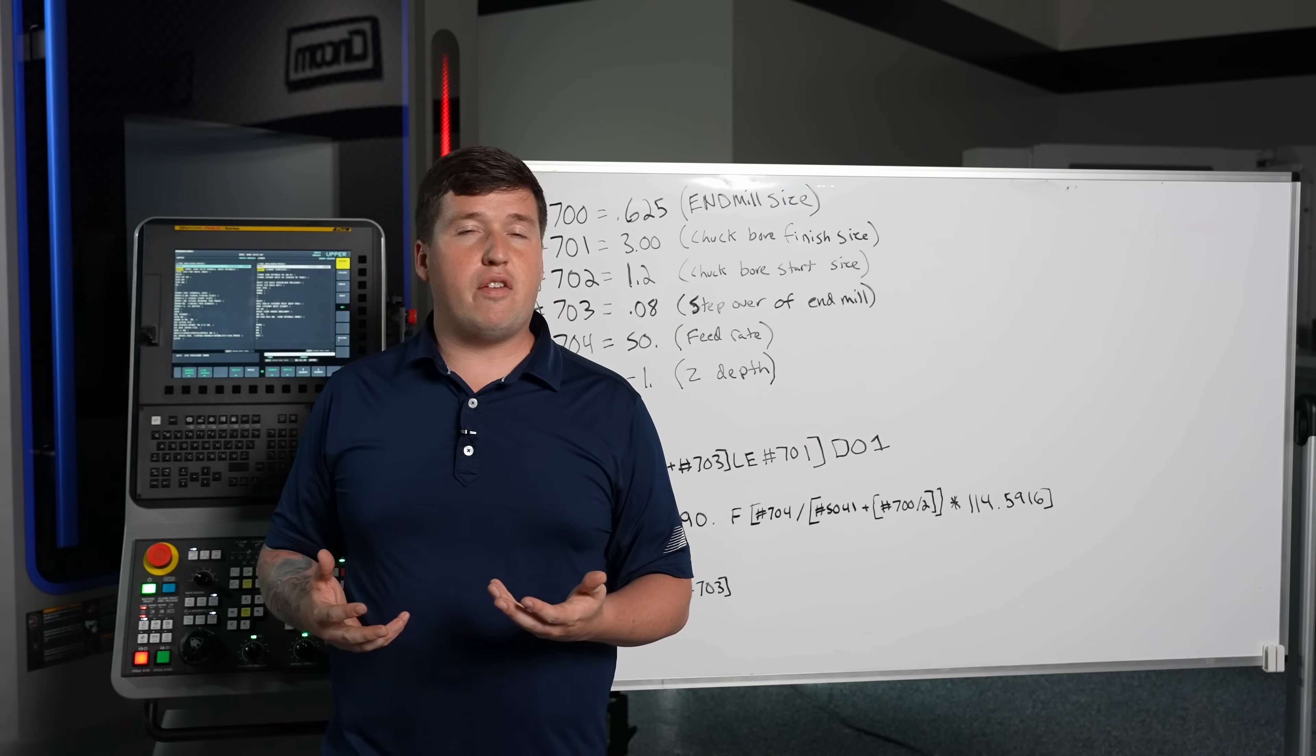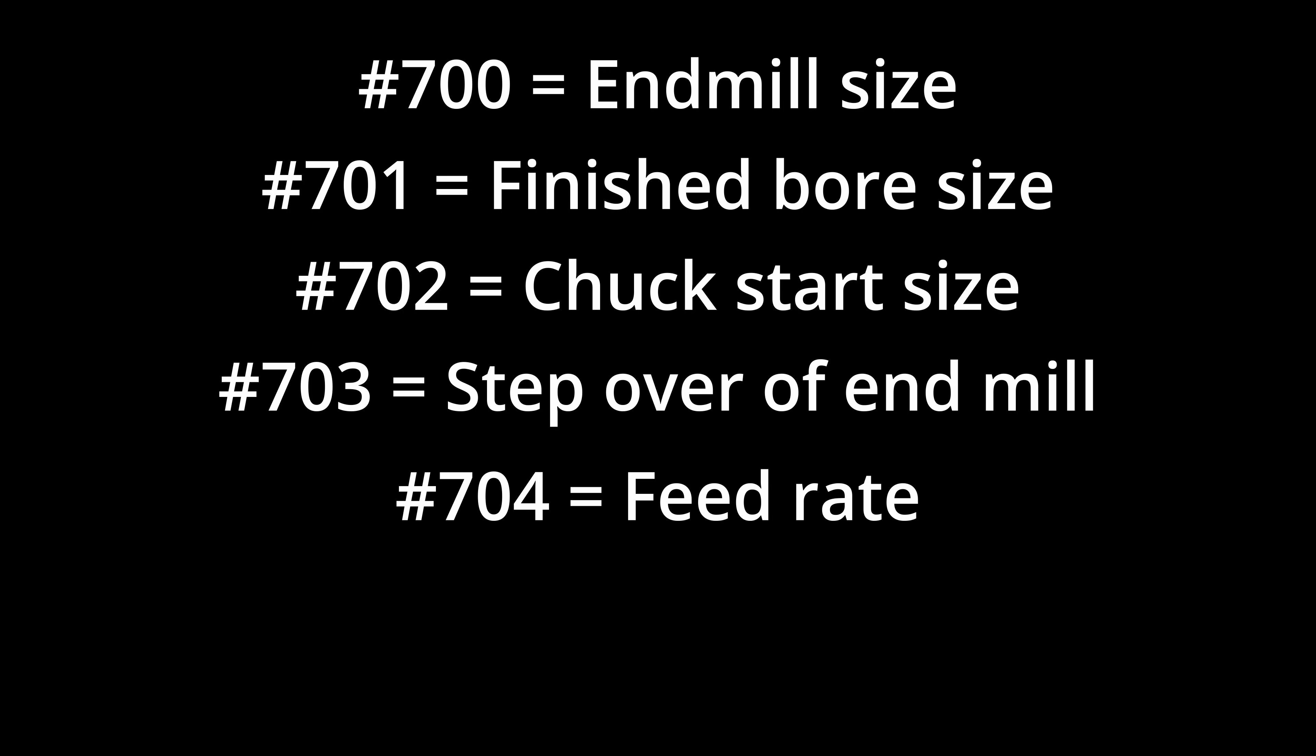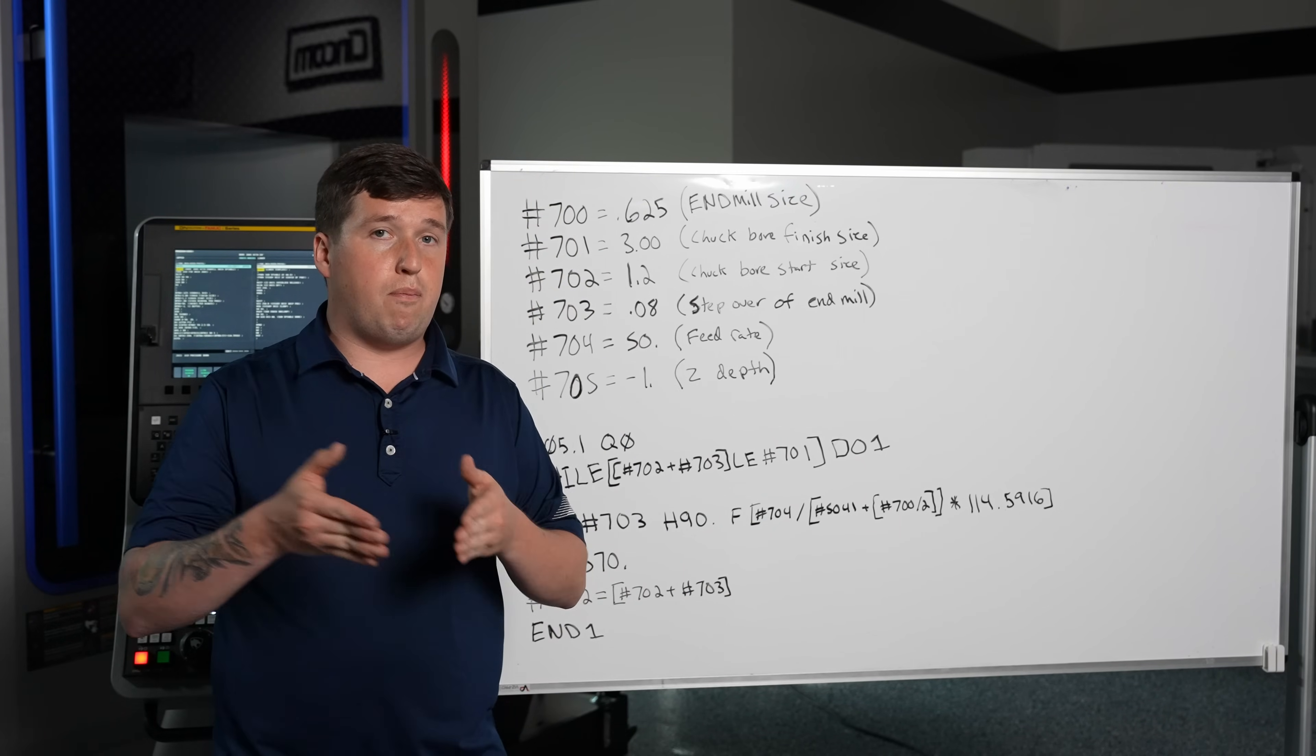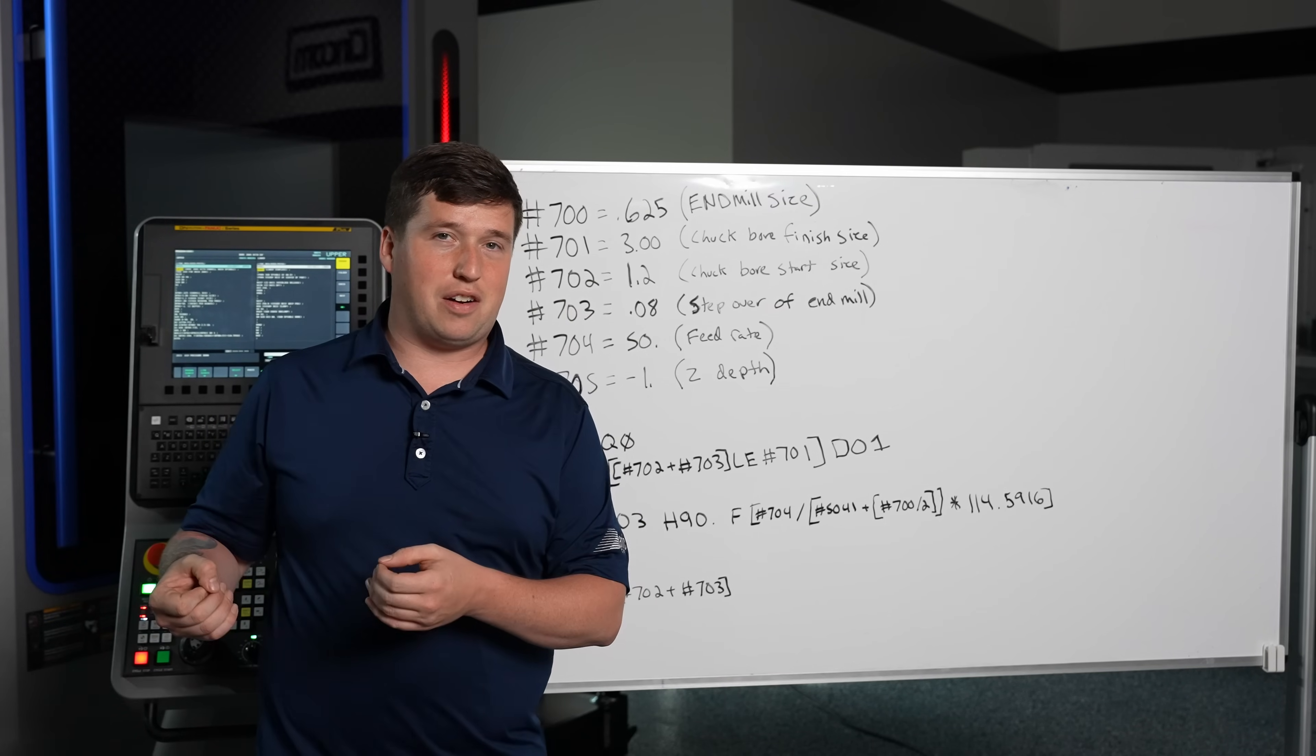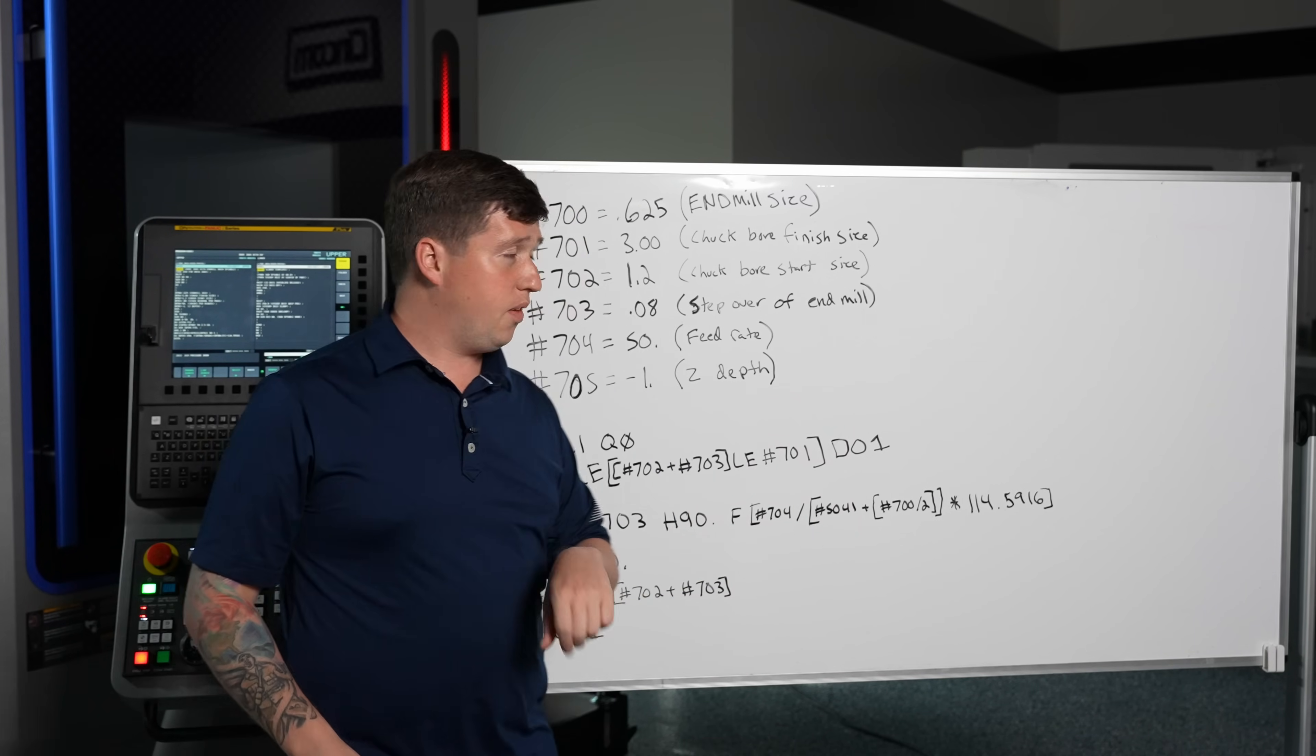Now the next pound variable is pound 704. Now 704 is going to be your feed rate and this is actually in inches per minute. I'm not going to get there yet but if you look down here I actually put the formula in to convert degrees per minute to inches per minute based off the diameter that you're going to be at per whatever you program in the macro. Yes that is what that does. We'll get to it though.